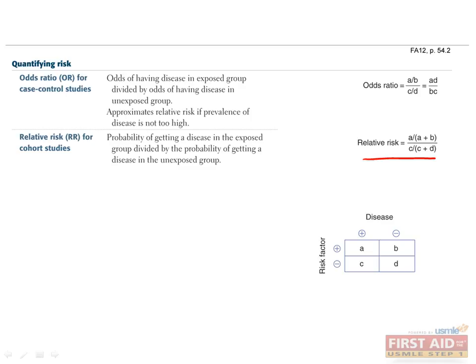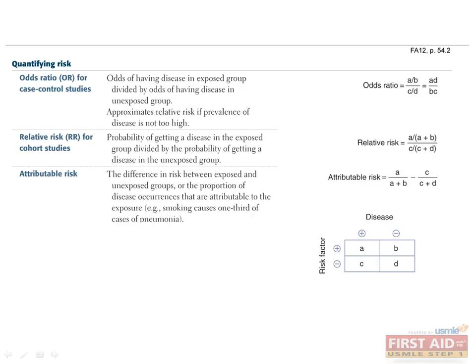Now let's discuss some other important parameters used for quantifying risk. The attributable risk is the difference in risk between the exposed and unexposed groups, or the proportion of disease occurrences that are attributable to the exposure. The attributable risk is calculated as A divided by A plus B minus C divided by C plus D, as given by the 2 by 2 table. For example, if the probability of getting pneumonia for smokers is 2 thirds while that for non-smokers is 1 third, we could conclude that the proportion of pneumonia occurrences attributable to smoking is 2 thirds minus 1 third, which equals 1 third.